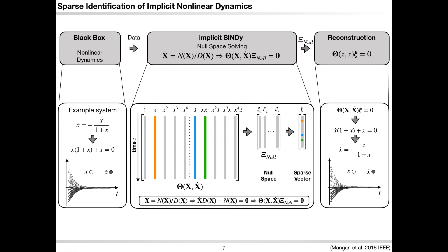They allow the combination of x and x-dot in the library and then try to solve for the library matrix null space. Finally, they pick the sparse null space vector that selects a few nonlinear terms in the library to back out the implicit dynamics. Once the implicit equations are found, we could then symbolically solve for the expression of x-dot, thus finding the rational dynamics.